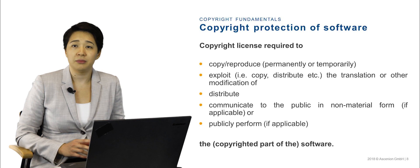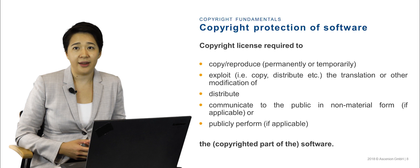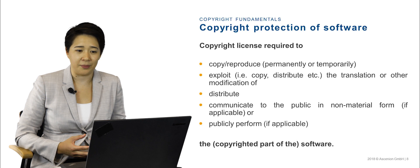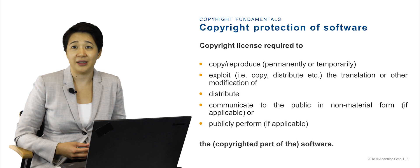With respect to the copyrighted part of the software, a copyright license is required to copy and reproduce, exploit such as copy or distribute, translate or modify that part of the software, distribute, and also if applicable communicate to the public in a non-material form or publicly perform that part of the software or copyright material. Therefore, copyrighted works can be commercialized by negotiating a license agreement with a company that regulates these terms.